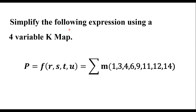In this video, I will consider one function to simplify using a four variable KMAP. Simplify the following expression using a four variable KMAP. This is the given function. The function variables are R, S, T, and U. We have these minterms, so we have to simplify this using KMAP.